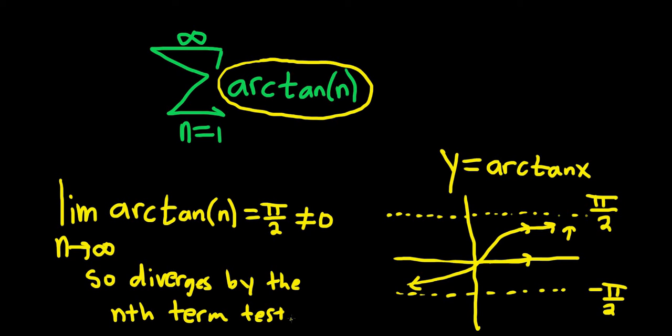It's important to realize that this test can only be used for divergence. Some textbooks call this the n-th term test for divergence, because people often use it incorrectly. So basically, if you take a limit and it's not equal to 0, then it diverges.